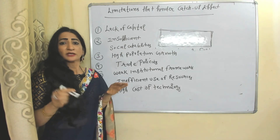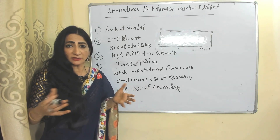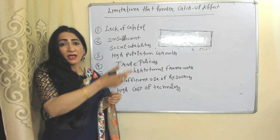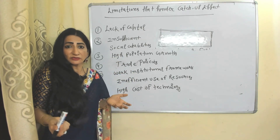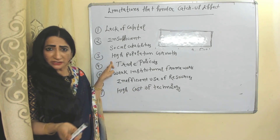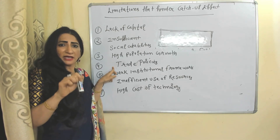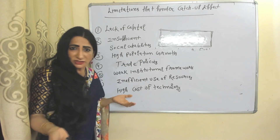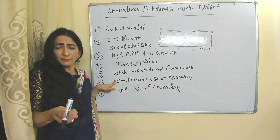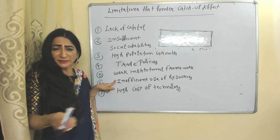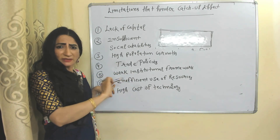Now we will look at limitations that hinder the catch-up effect. First, lack of capital: no doubt technology is already available, but we still require capital in order to imitate existing technology. Poor countries often have a lack of capital. Second, lack of social capabilities: sometimes poor countries don't have the social capabilities to absorb existing technology, due to factors like high population.